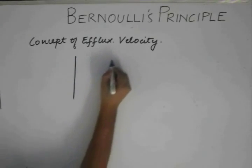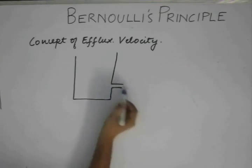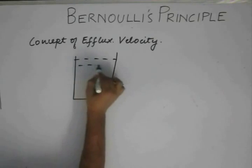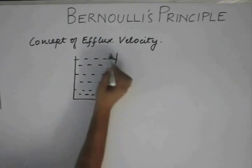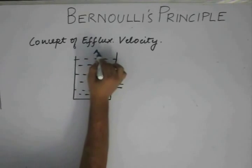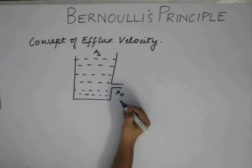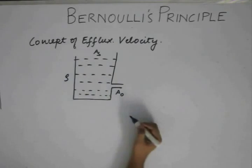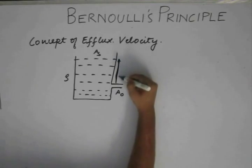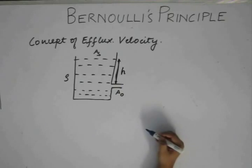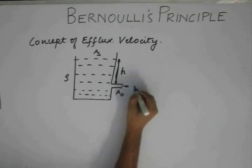Let us say we have a container containing some fluid, and a small orifice or small opening. The cross-sectional area of the top part is As and the cross-sectional area of the small orifice is Ao. This contains a fluid of density rho, and this height is h. What we are interested to find is the velocity of the fluid which comes out of this orifice, say that is Ve.